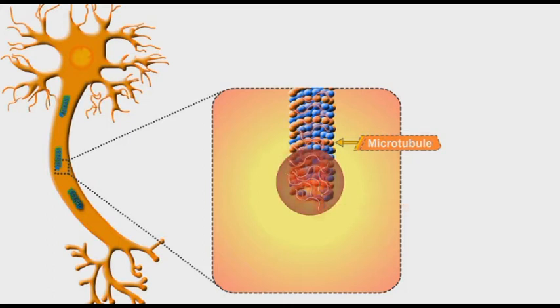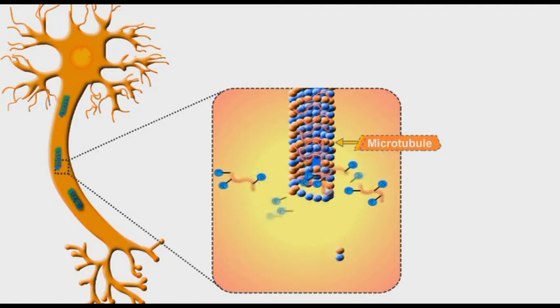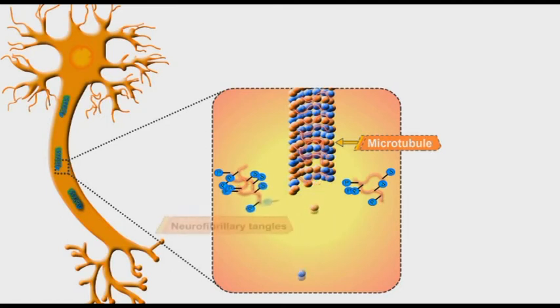However, in Alzheimer disease, the tau proteins are abnormally hyperphosphorylated. This hyperphosphorylation process makes tau proteins inactive and as a result, the microtubule loses its natural integrity and starts to collapse.